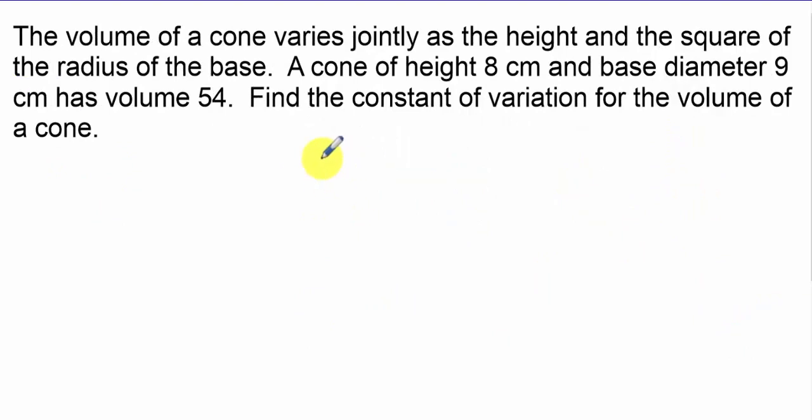Remember that is a direct variation with the product. The volume varies jointly with the height and the square of the radius. Again, they're looking for the constant, so this is a singular term. I'll have V over H R squared is equal to K.